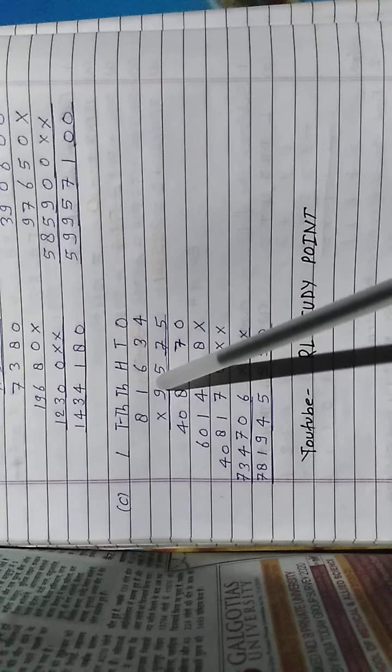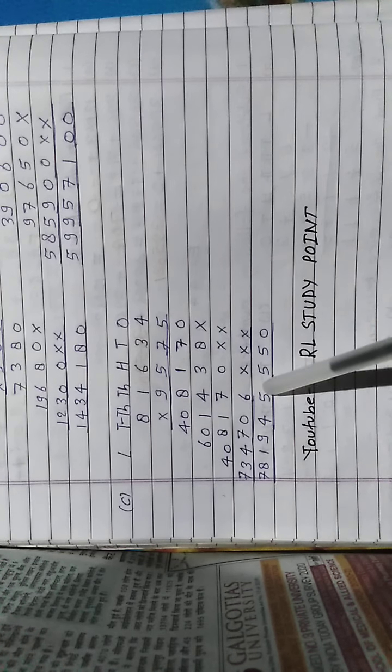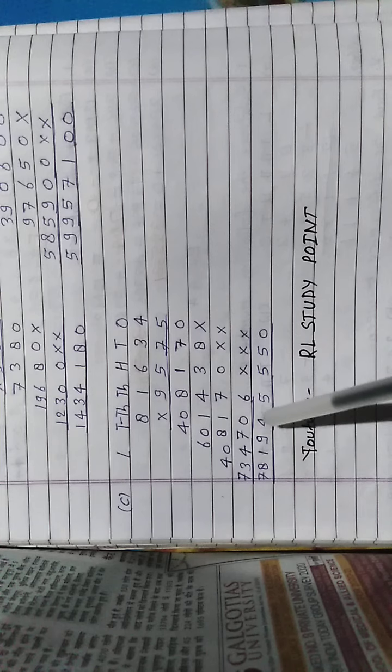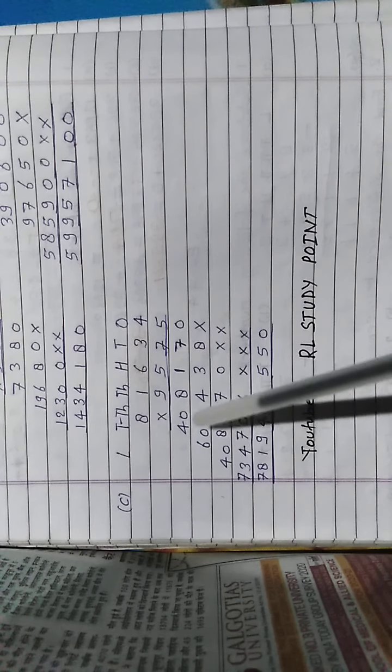That's we add 0, 8, 7, 15, 5 carry 1. 3, 1, 4 and 1 is 5. 8 plus 4 we get 12, 12, 7, 19, 19 and 6 is 25, 5 carry 2. 1, 1, 2, 2 and 2 we get 4.